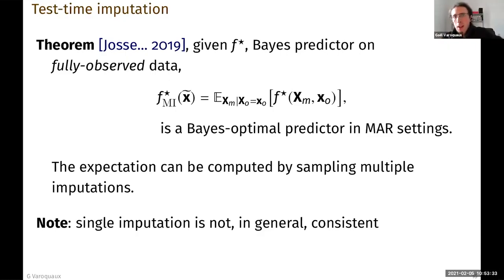And this can be done using multiple imputation by sampling. So really, at test time, I can sample multiple imputations and I can basically average the predictions if, by chance, I have the Bayes predictor on the fully observed data, which is a big if.